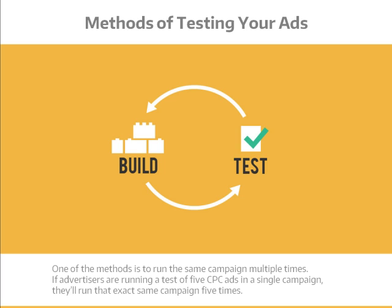One method that big advertisers use to get around this is to run the same campaign multiple times. If they're running a test of five CPC ads in a single campaign, they'll run the exact same campaign five times. That can trick Facebook into giving each of the ads enough of a run to make meaningful comparisons, identify the best performing ads, and drop the rest.